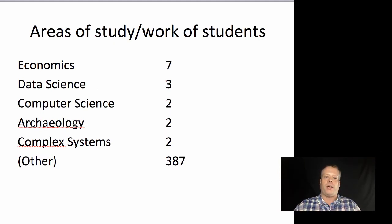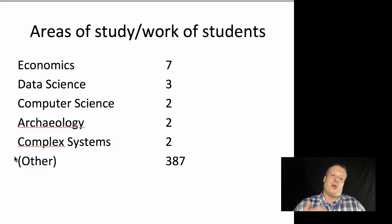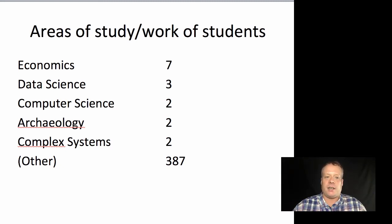One of the first questions we asked was what are the major areas of study or work of the students — what are you interested in looking at? There was a big interest in economics, but then data science, computer science, archaeology, complex systems, but all these are fairly small. Of the people who filled out this question, only seven said economics. But generally my understanding is that it takes a certain amount of responsiveness to even get to the answer, so usually this is a fairly good characterization of what the class composition is about.